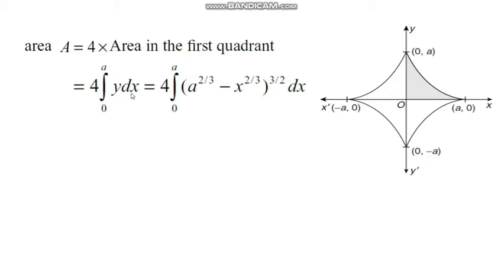Area of the astroid = 4 × integral from 0 to a of y dx = 4 × integral from 0 to a of (a^(2/3) − x^(2/3))^(3/2) dx. This is a definite integral in terms of x, and the integrand consists of a fractional exponent. To handle this, we need to convert it in terms of another variable using substitution.